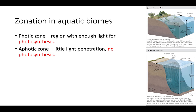Beneath the photic zone is the aphotic zone. The aphotic zone has little light penetration, and because there's not enough light, there is no photosynthesis. Zonation occurs in both lakes and the ocean, but in the ocean you're going to have a larger aphotic zone because there's much more depth that sunlight wouldn't be able to reach.